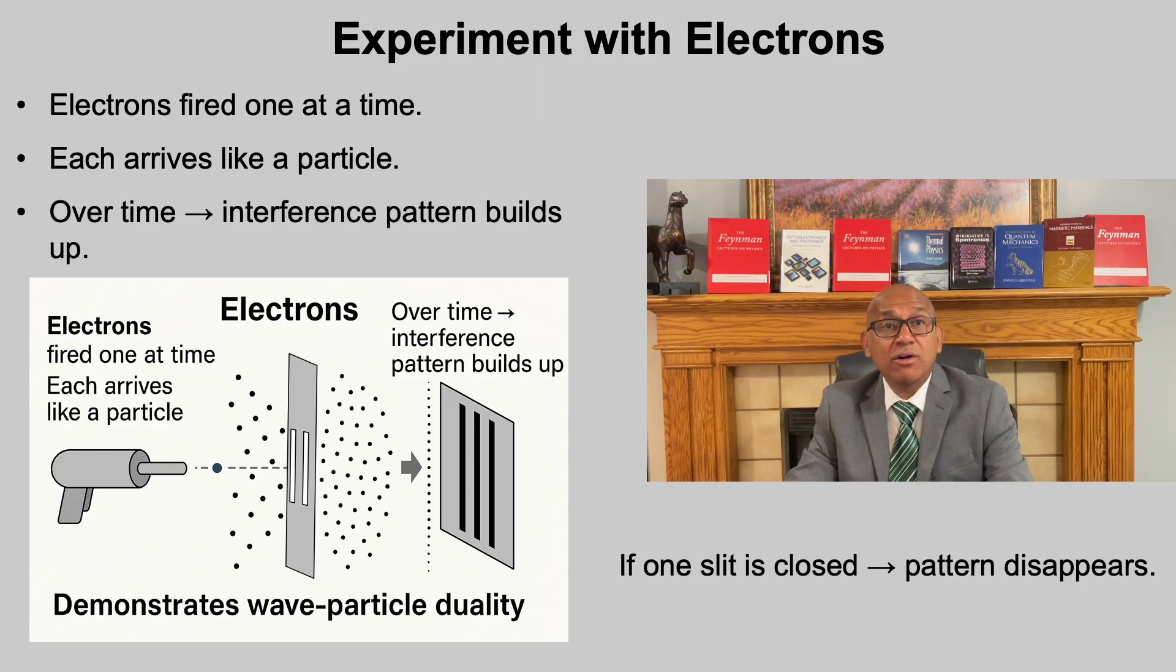In the previous slide, we saw how bullets give two bands and waves create an interference pattern. Now let us focus on electrons. Fired one at a time, each arrival looks like a particle, but as the hits accumulate, a wave-like interference pattern emerges. Crucially, if we close either slit, the interference vanishes. The distribution collapses to a single broad band with no fringes, because the electrons no longer have two paths to interfere with itself.